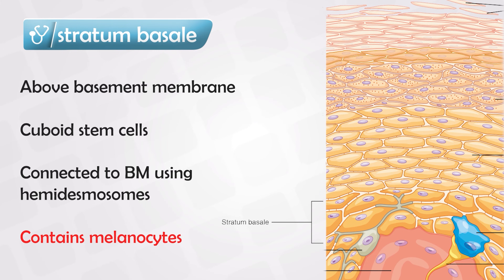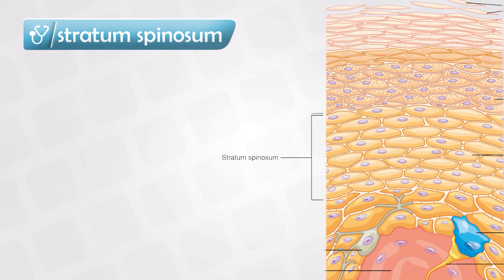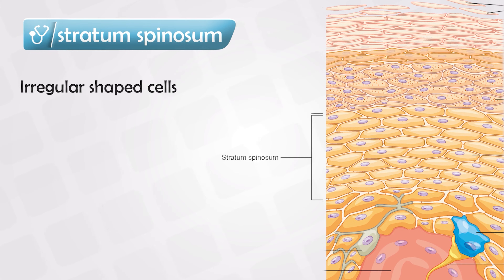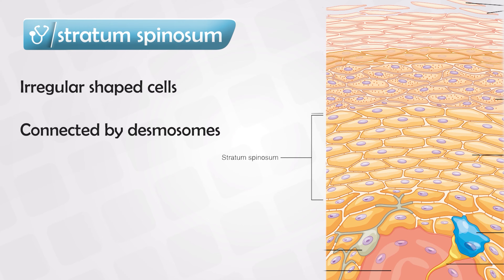The next layer, stratum spinosum, is quite thick — about eight to ten cell layers — and is formed by polyhedral or irregular cells. These cells have many processes or projections going outward, and they are connected together by desmosomes, which again we will discuss in the cell junction video.